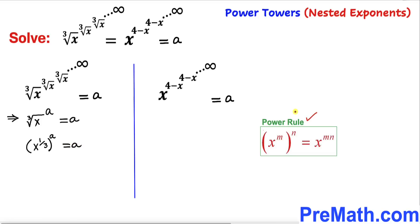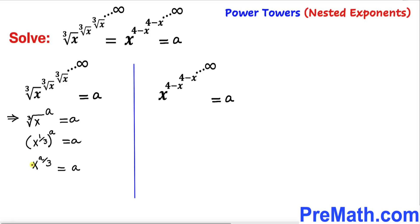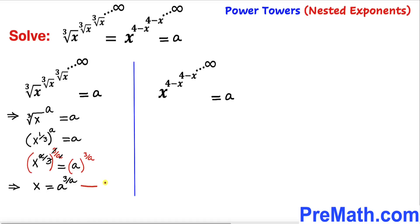Recalling the power rule of exponents, we multiply the nested exponents: the left-hand side becomes x to the power a over 3 equals a. Now let's raise both sides to the power 3 divided by a. The 3s cancel and the a's cancel, leaving us with x equals a to the power 3 divided by a. Let's call this equation number 1.